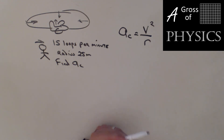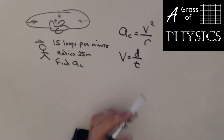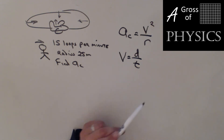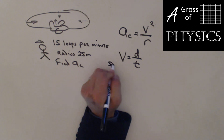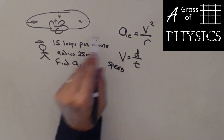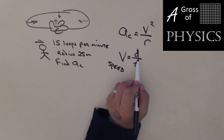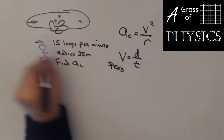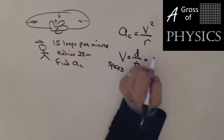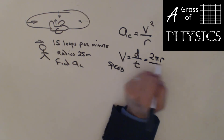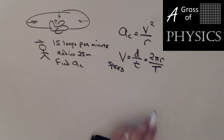Speed is distance over time. Since we care only about magnitude, we use speed rather than velocity, because direction keeps changing. The distance around the outside of a circle is the circumference: πd or 2πr. The time is the time period — how long it takes to make one loop.